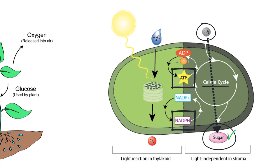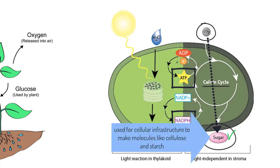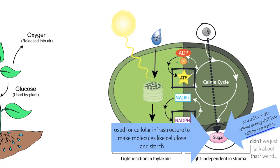This glucose molecule can then be used by the plant for building and repairing cellular structures, or can be broken down via the mitochondria in the plant to create ATP — which is, of course, cellular respiration, a process that the plant also undergoes along with photosynthesis.